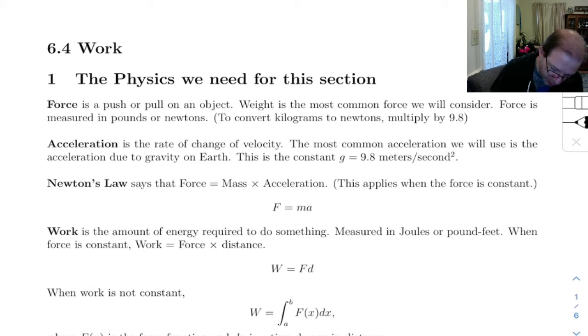So Newton's law here says that force is equal to mass times acceleration, and this applies when force is constant. And so this is probably the most important, or it's one of the most important laws in physics: F = ma. Now we could also write a special case of this: weight is equal to mass times g. That's the little g up here.